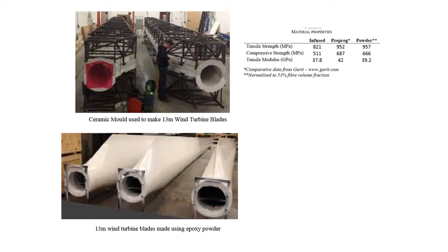Here, a ceramic mold used to make 13-meter wind turbine blades is shown. The picture below shows 13-meter wind turbine blades made using epoxy powder. In the table, three kinds of composite materials are compared in view of material properties — tensile strength, compressive strength and tensile modulus. The materials are infused composites, prepreg and powder material.